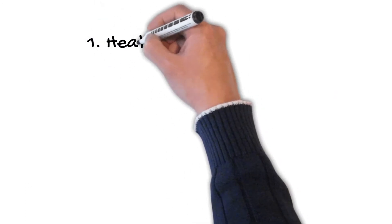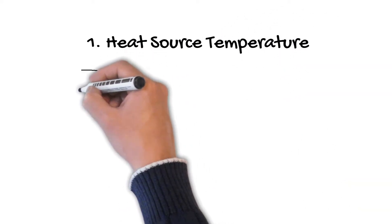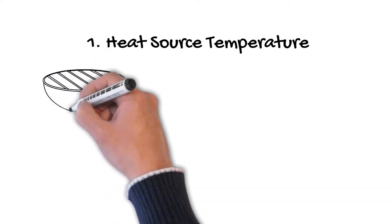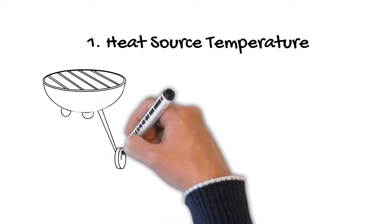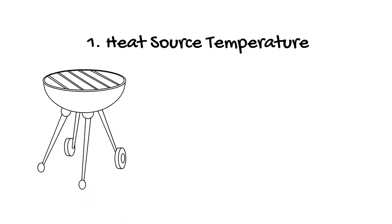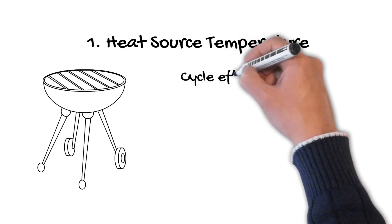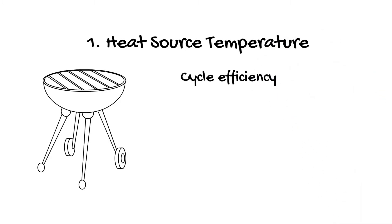First on my list, we need to consider the heat source temperature — whether the heat source is the waste heat from a heat engine, biomass, or solar heat source. This temperature has an effect on the overall system performance and cycle efficiency, as the cycle efficiency of the Carnot cycle is a function of the maximum temperature and the heat sink temperature.